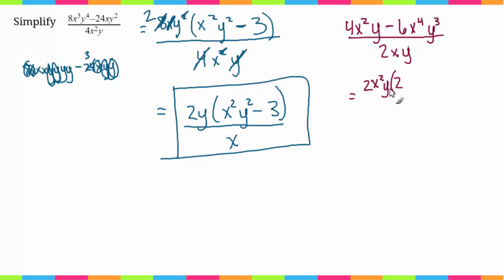Now I have to multiply by what's left. So since I took a 2 away from this 4, I'm going to be left with a 2. I took an x squared from the x squared, so there's nothing there. And I took a y from the y, so there's nothing there either. So now I'm going to subtract and I'm going to do the same thing.